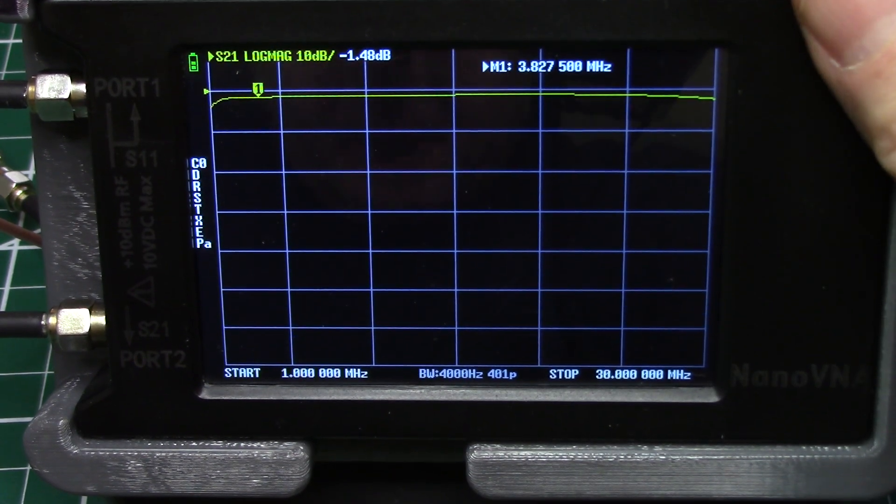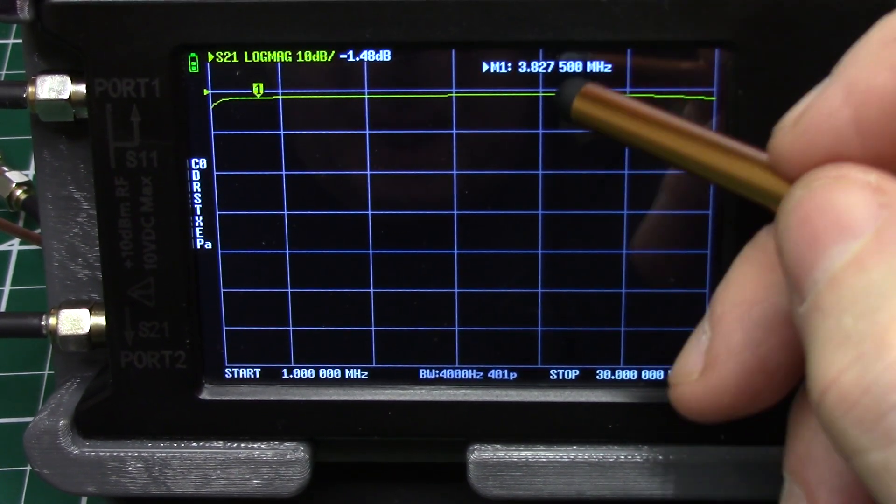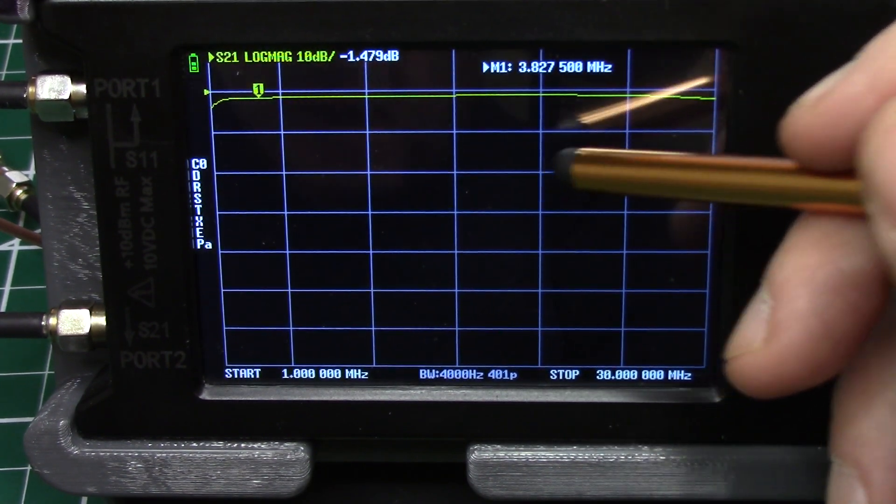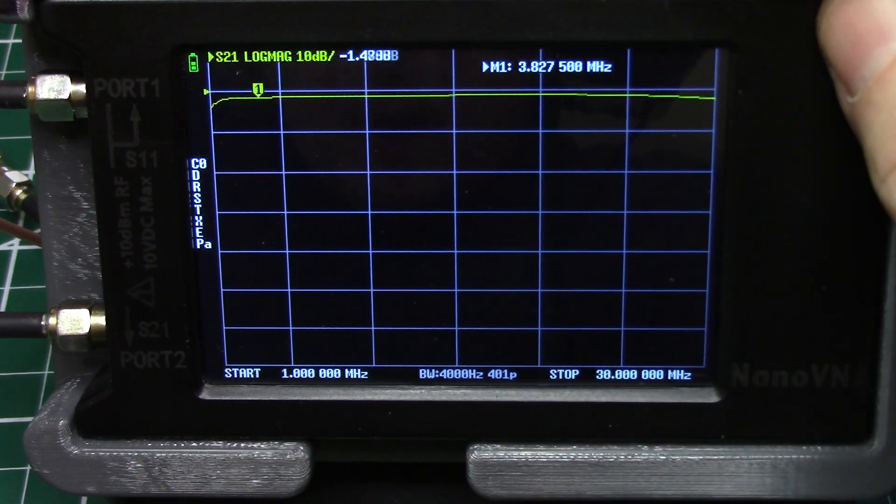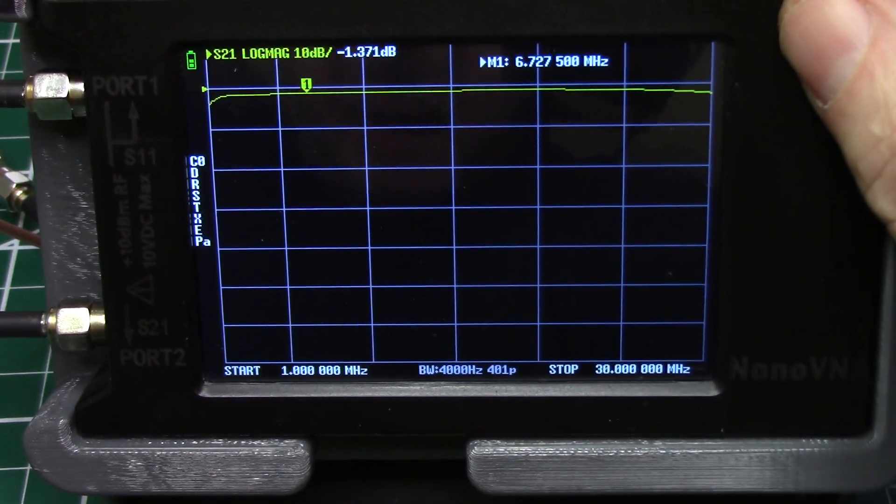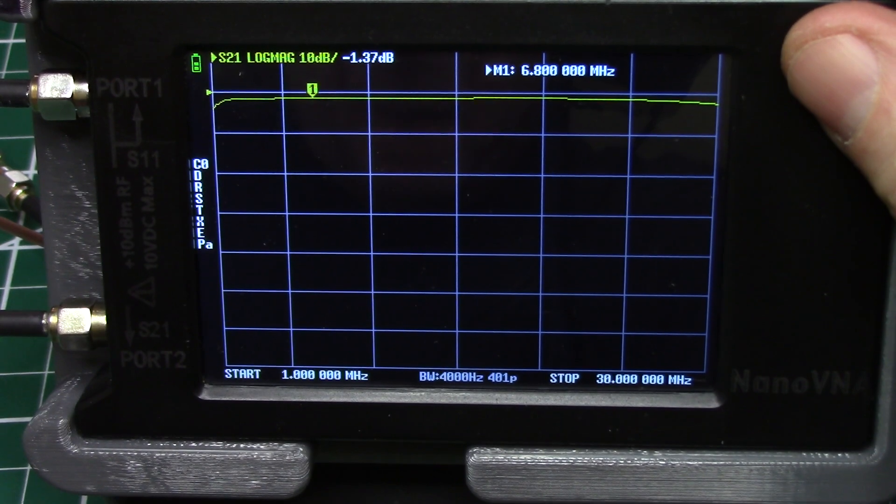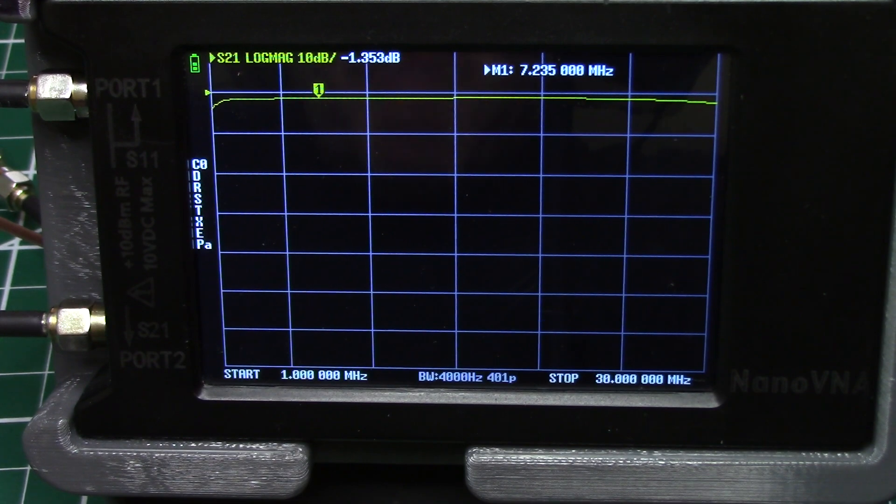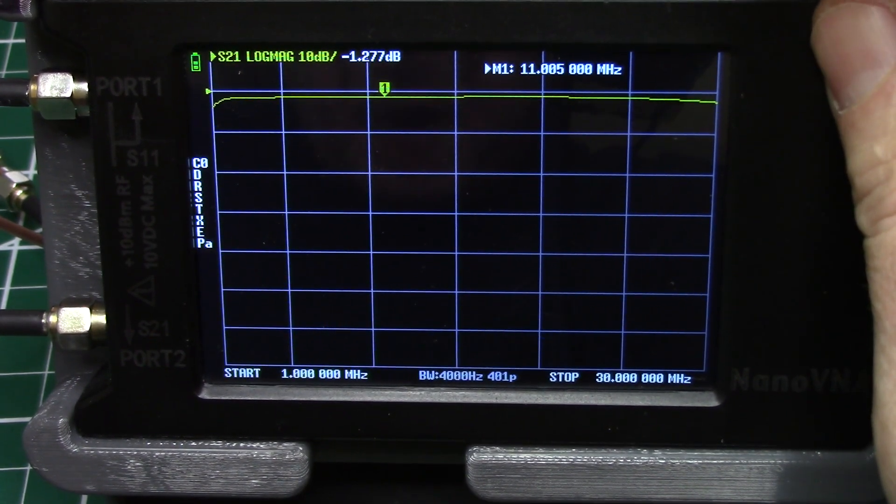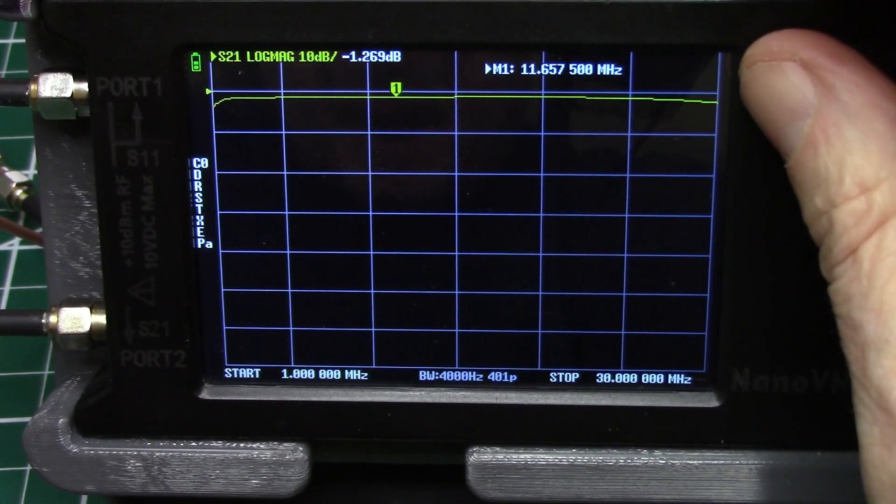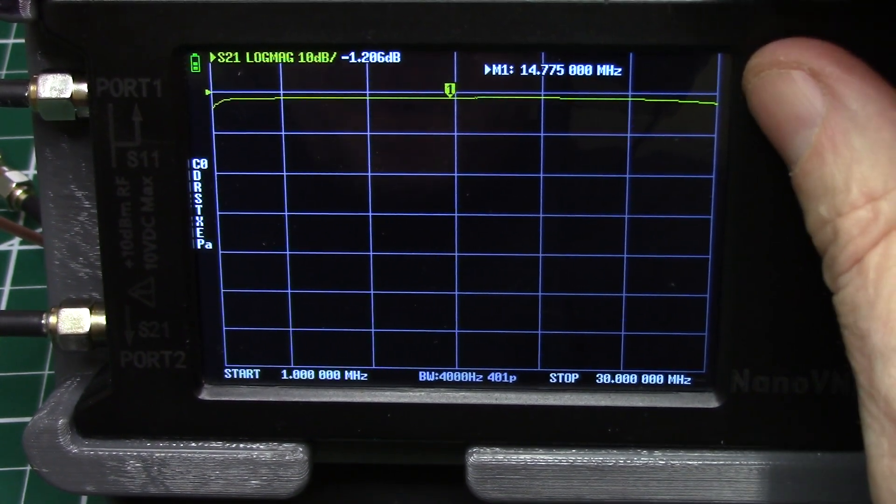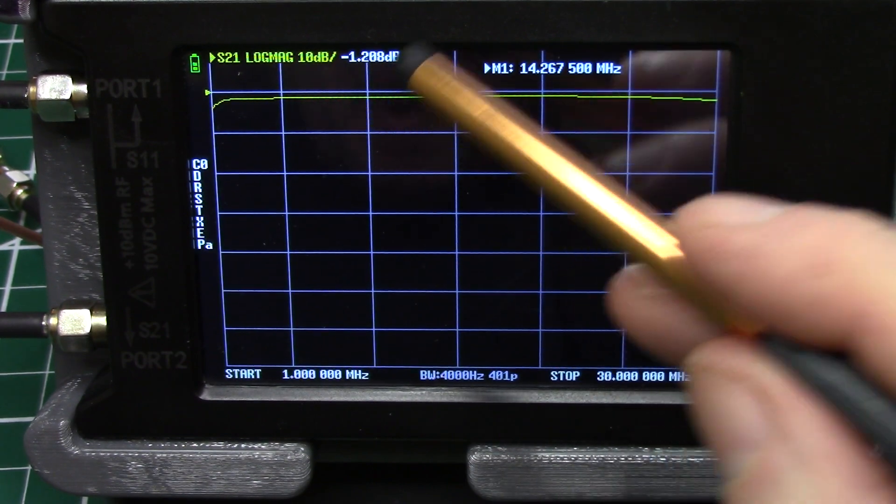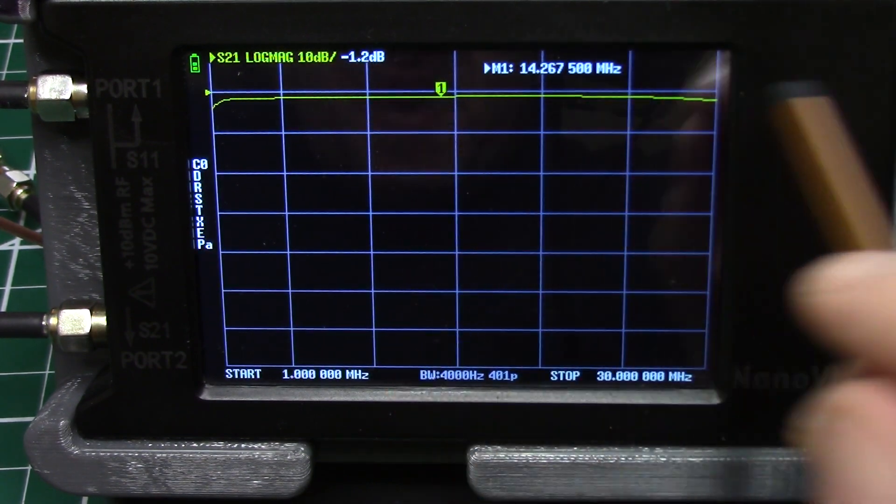So we can see here we're at 3.827 down in the 80 meter band and we've got a negative 1.48. We run that on up to the 40 meter band. And there's 7.235, we've got a negative 1.35 there. And you can go through your different frequencies, check them out. Going up to 14, there at 14.267 we've got a negative 1.2 or thereabouts. But you can run through your different bands.